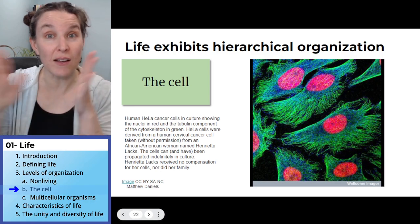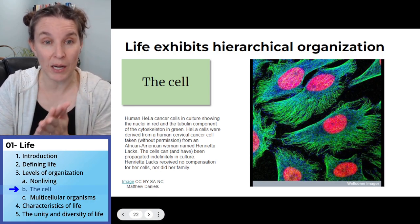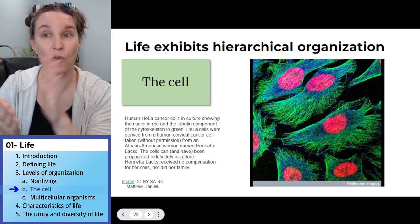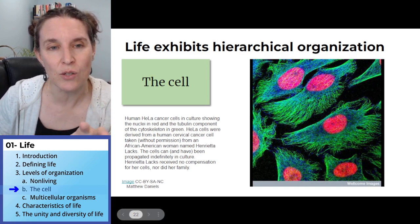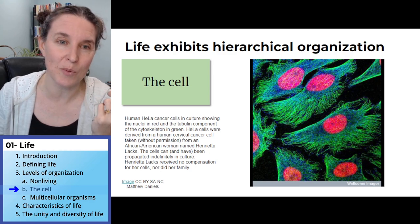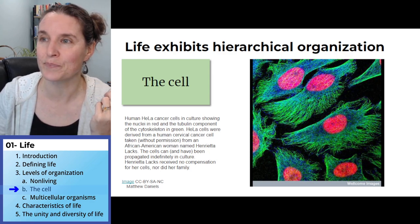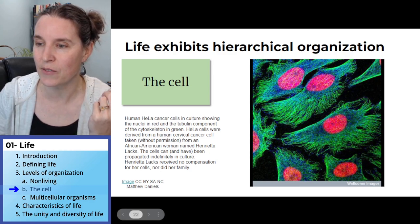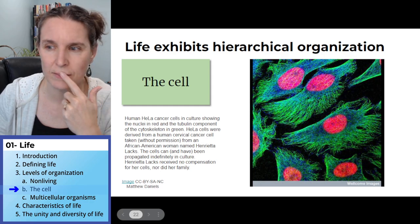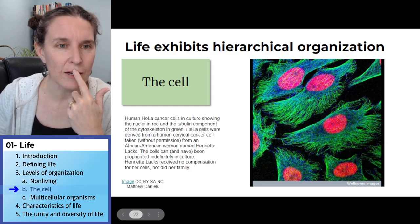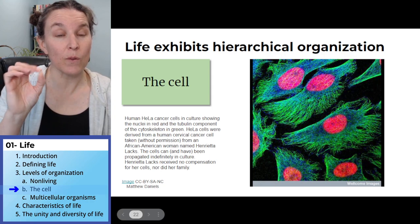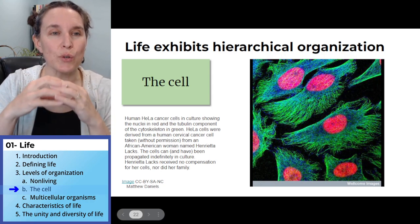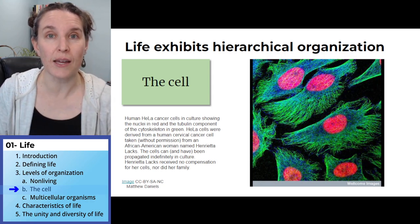So, cells combine to form tissues. The imaging used in this picture is really beautiful — the red circles are the nuclei in the cells themselves, so you can actually see some of the organelles that make up the cells.